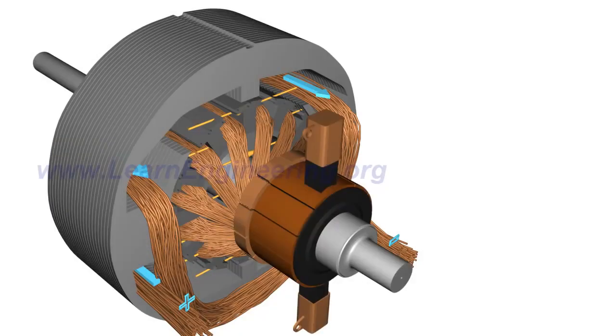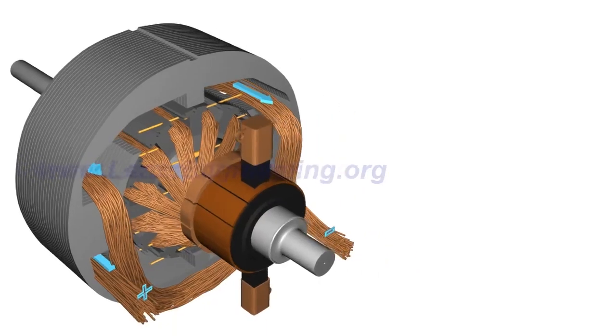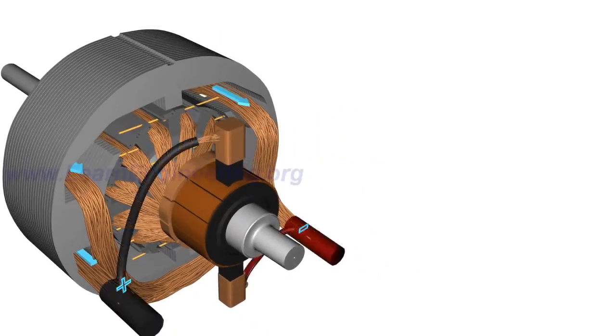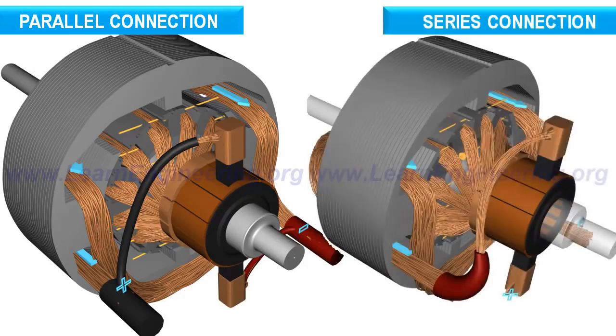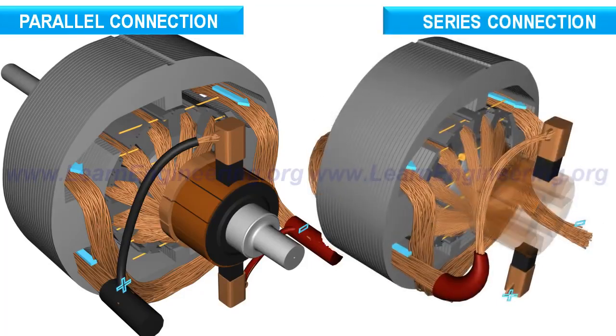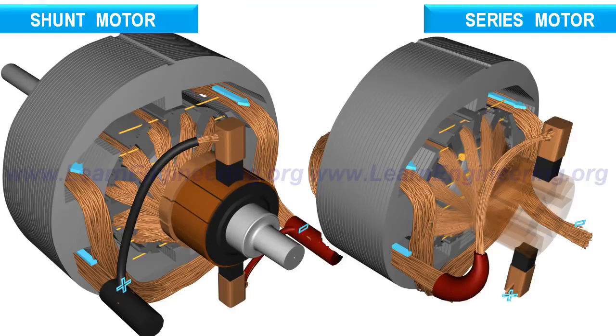The field coils can be connected to the rotor windings in two different ways, parallel or series. The result is two different kinds of DC motor constructions, a shunt and a series motor.